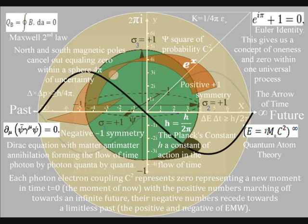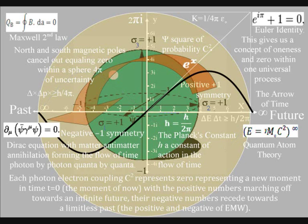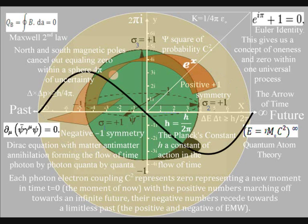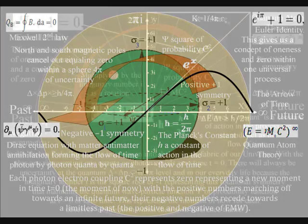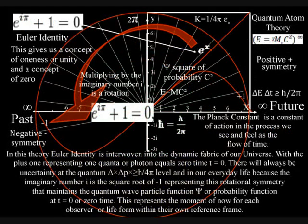In the top right hand corner of this diagram we have Euler's identity, the most beautiful equation to come out of the mind of man. But this beautiful equation has no meaning or purpose in modern physics. But in this theory, Euler's identity is interwoven into the dynamic fabric of our universe, with the plus one representing one quantor, or photon, equals zero time, t equals zero, the moment of now. To understand this further, we have to use the next diagram that shows how this spherical symmetry breaks, forming spiral symmetry, that has line symmetry, for the arrow of time.